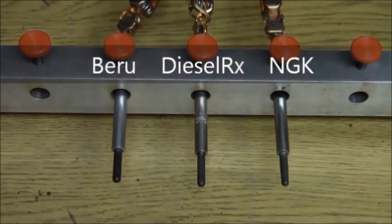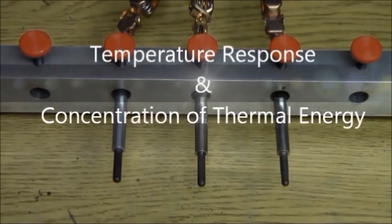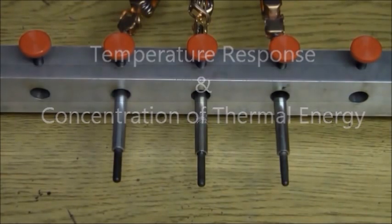We will concentrate on the following factors: temperature response and the concentration of thermal energy. Temperature response is indicated by how fast the glow plug begins to heat, and the concentration of thermal energy is indicated by where the heat can be seen on the probe.